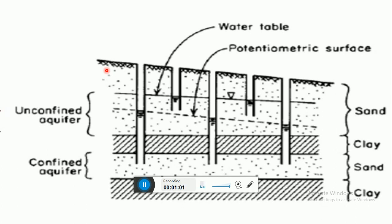In the absence of groundwater flow, the water table will be flat. In the case of lack of water table information, the water table is assumed to have the same general shape as the surface topography. In general, the water table is considered the boundary between the unsaturated zone and the saturated zone, and is the line joining points of the hydraulic head of unconfined aquifer wells.